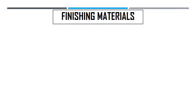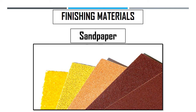Now let's proceed to the finishing materials. Finishing materials represent the last step in the completion of a project — they are the final method of beautifying the project. The first finishing material is sandpaper, a paper covered on one side with sand or other abrasive materials such as silica or flint quartz. It is used to smoothen the rough surfaces, edges, or ends of articles made from bamboo.